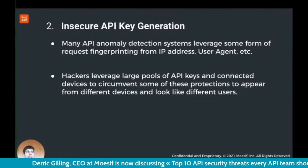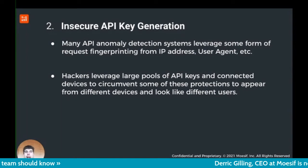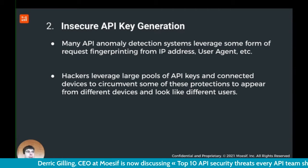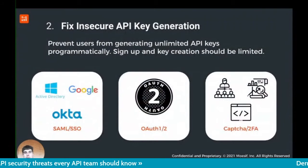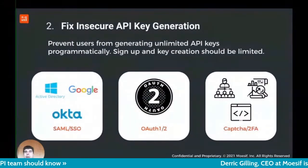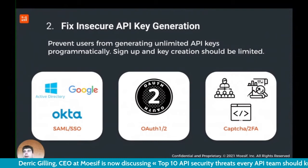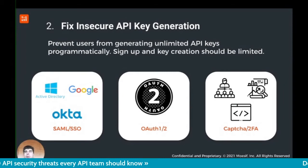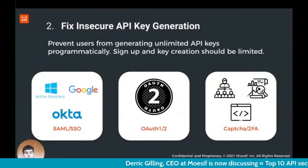The second thing we see is insecure API key generation. Hackers often try to create large pools of API keys, each accessing your API from different IP addresses, to circumvent detectors. One way to secure this is by ensuring API keys are generated in a secure fashion — before creating a master key or refresh token, require a CAPTCHA or two-factor authentication, and use single sign-on or SAML. From there, you can allow customers to generate short-lived tokens automatically, but that first secure step is critical.